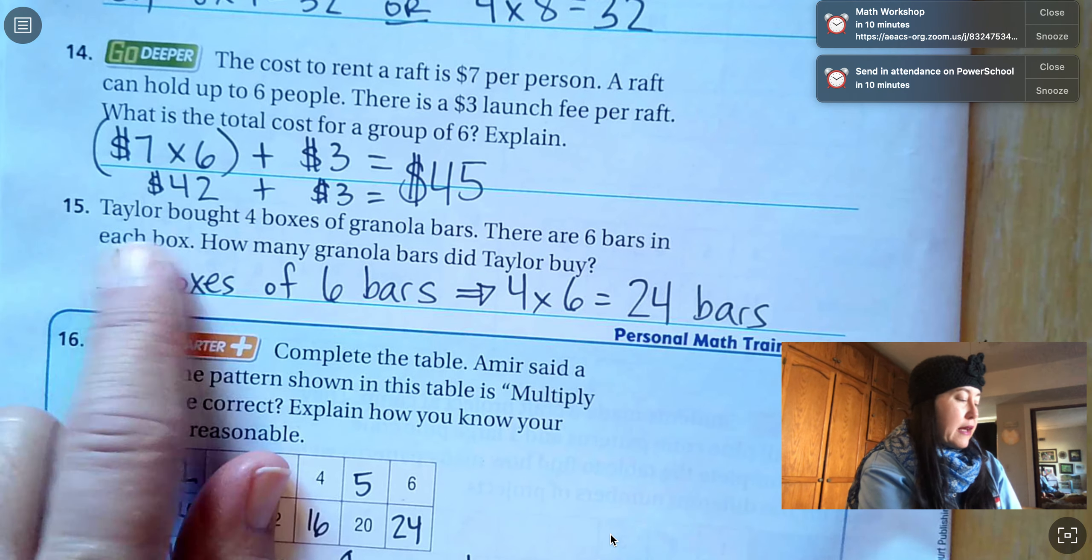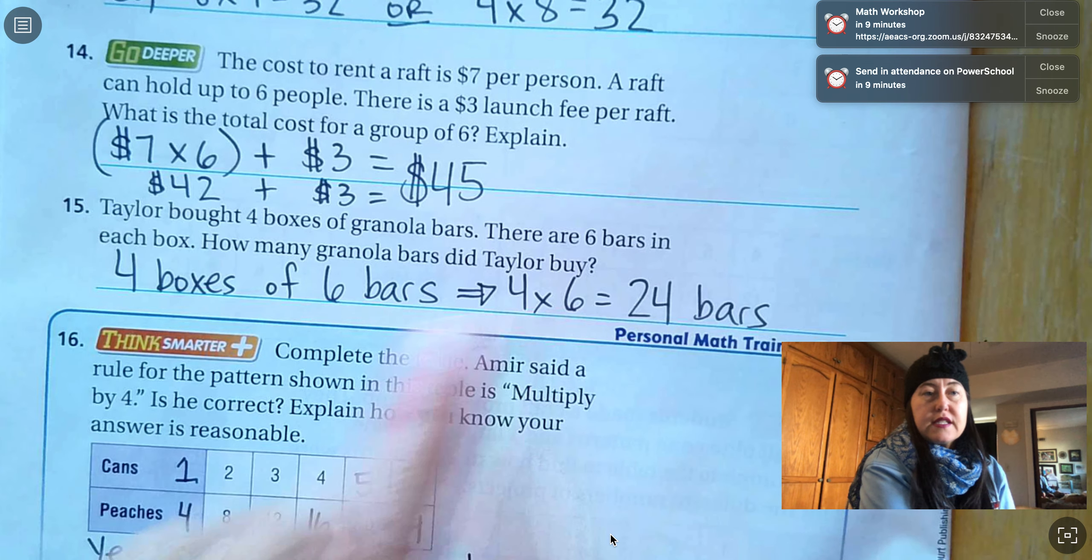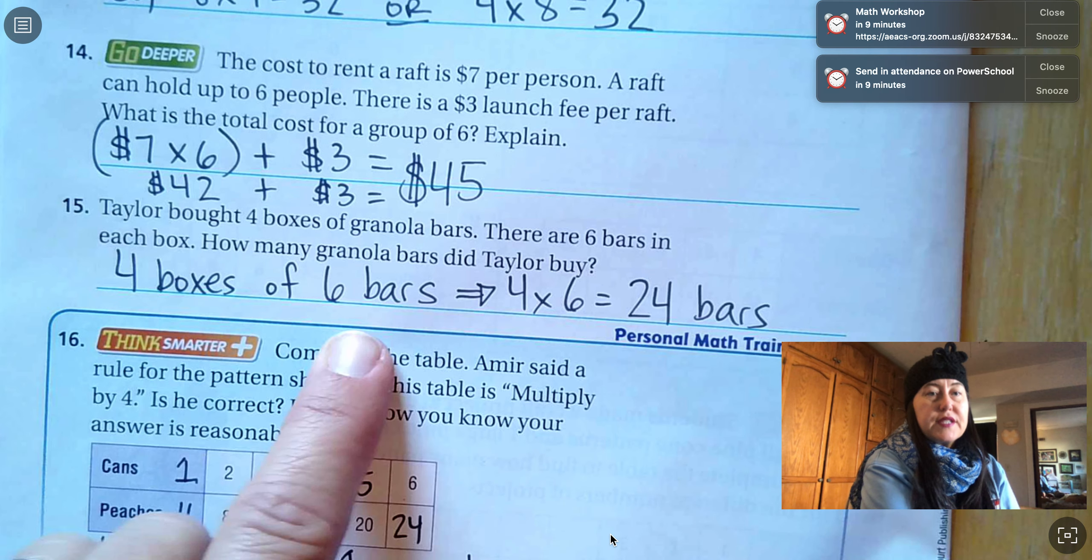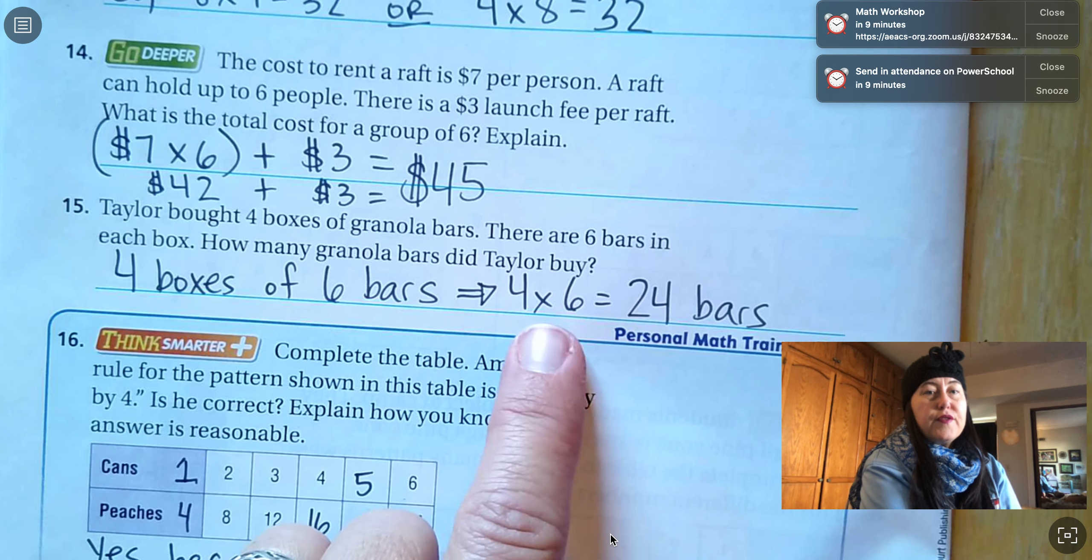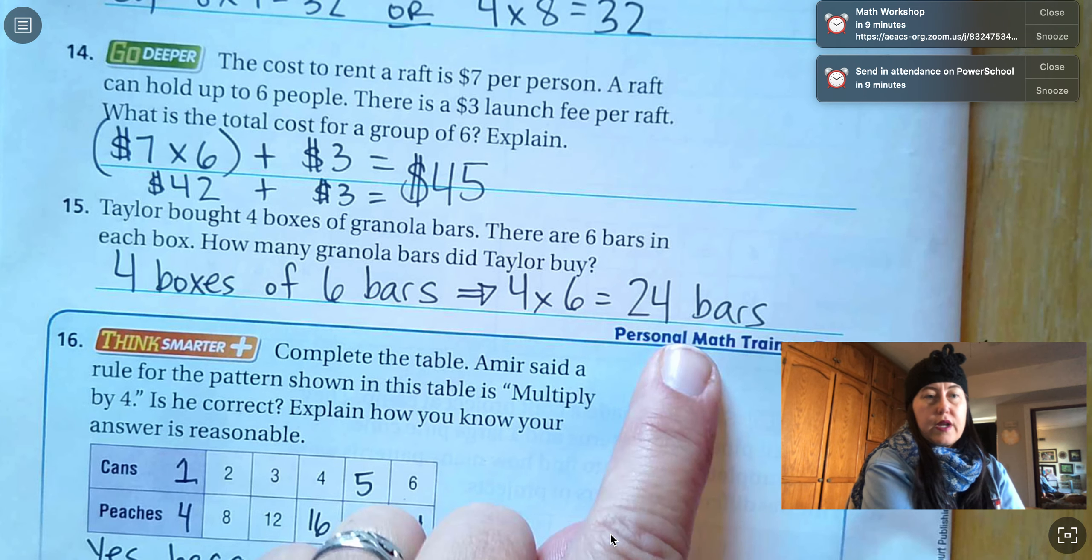Number 15. Taylor bought four boxes of granola bars. There are six bars in each box. How many granola bars did Taylor buy? So four boxes of six bars. Four of six, four groups of six. Four times six is twenty-four.